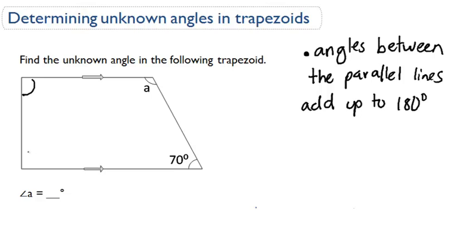Okay, so if we were to just name these B and C, B and C would add up to 180. So angle B plus C equals 180, because they are between the parallel lines.